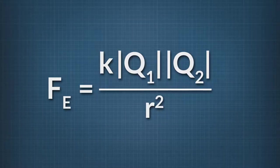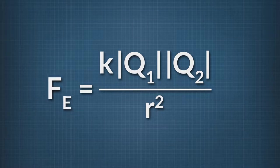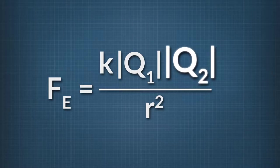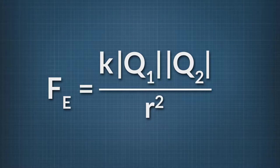Now here is the formula for Coulomb's Law. The electric force between two charges is equal to K times the absolute value of Q1 multiplied by the absolute value of Q2, all divided by R squared. K is the electric constant, equal to 9 times 10 to the 9th Newton meter squared per Coulomb squared. Q1 is the first charge in Coulombs, Q2 is the second charge in Coulombs, and R is the distance between them in meters.